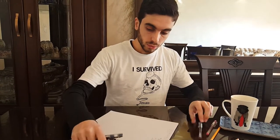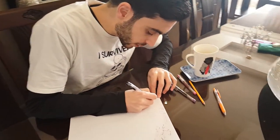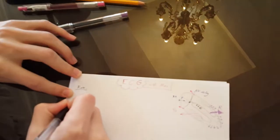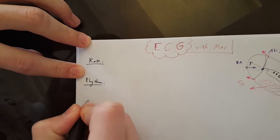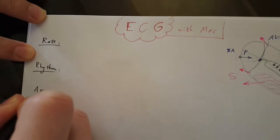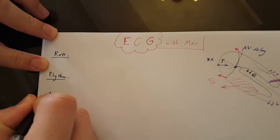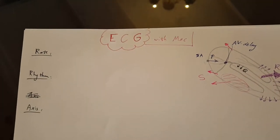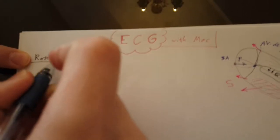When we start analyzing an ECG, we usually begin with rate, rhythm, and axis.